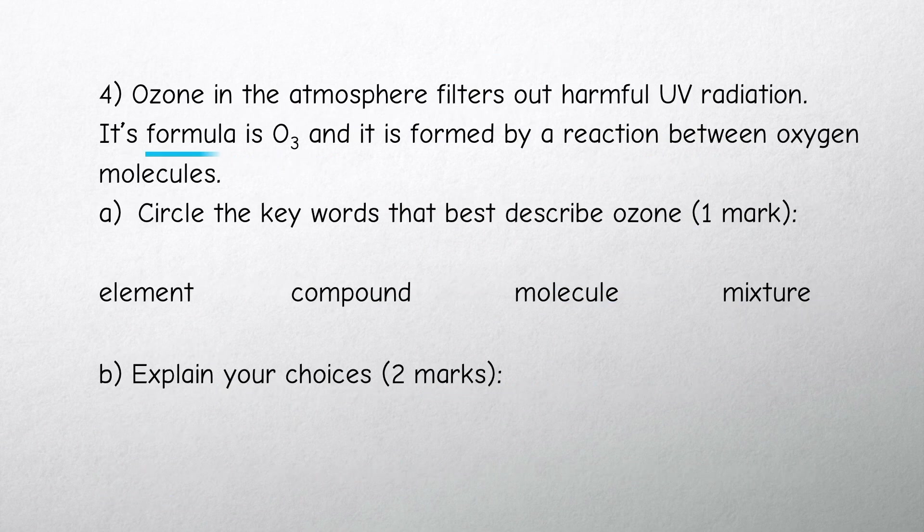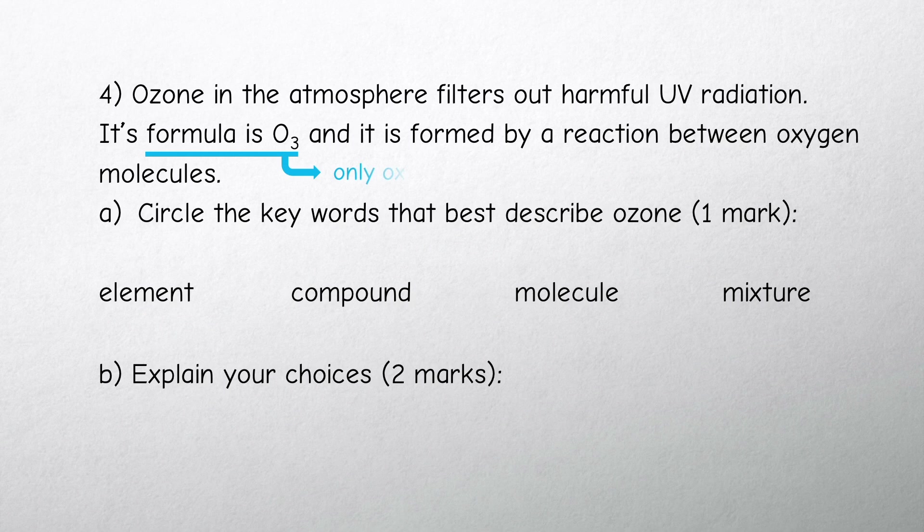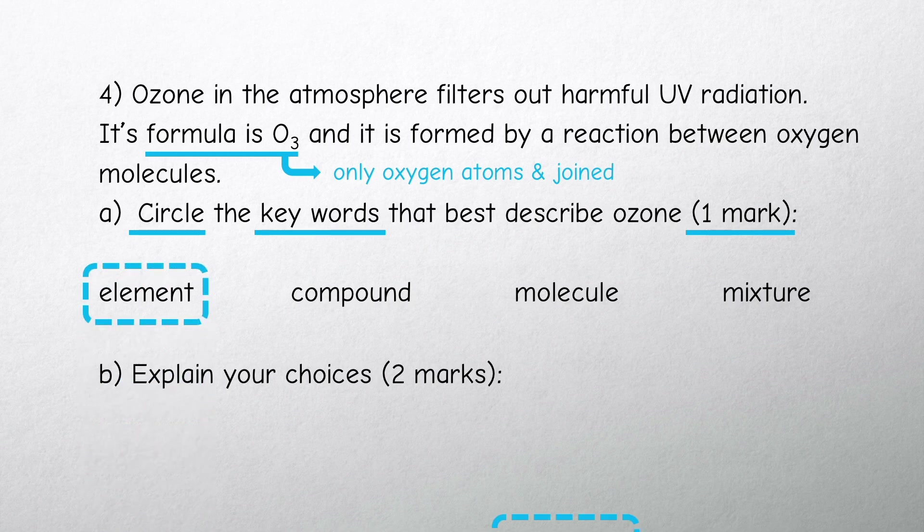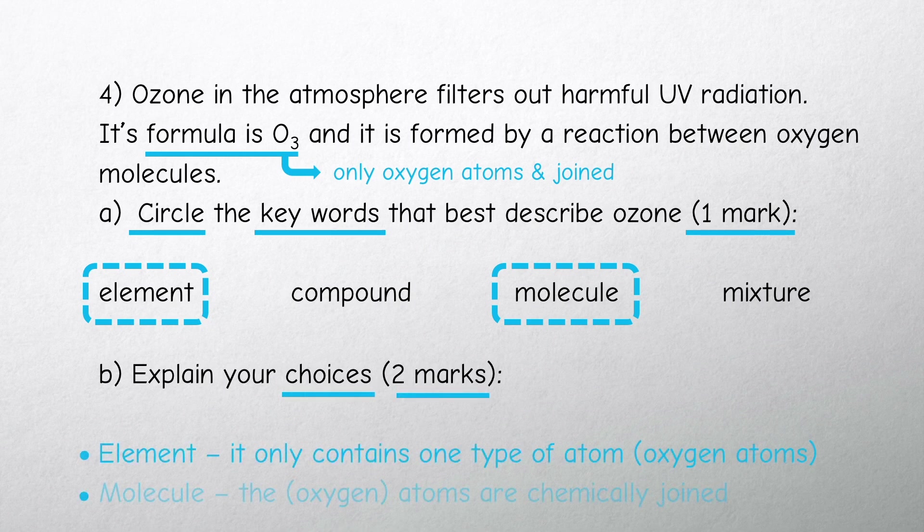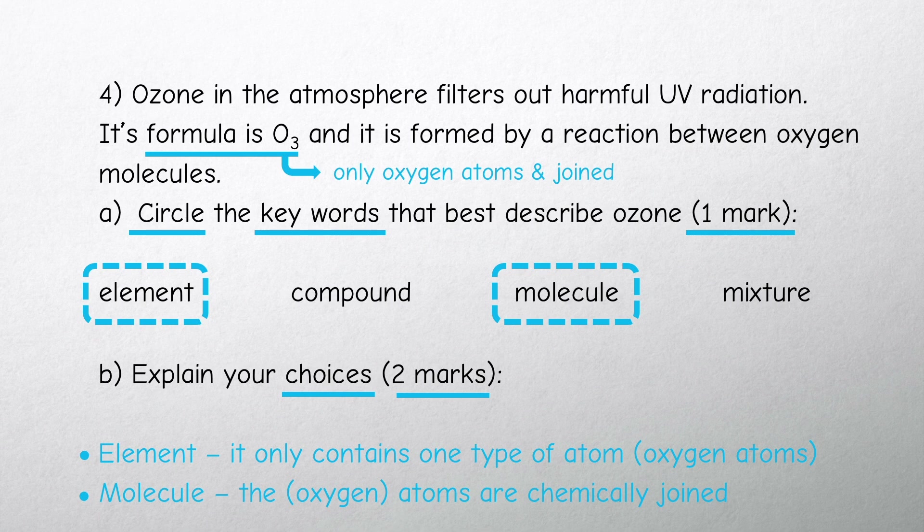In questions like these many pupils miss the first clue that it says key words, so you need to pick more than one answer for this mark. Ozone is an element and a molecule. The second clue is that the next question says choices and that it's worth two marks. It's an element because it only contains one type of atom. It's a molecule because the oxygen atoms are chemically joined.